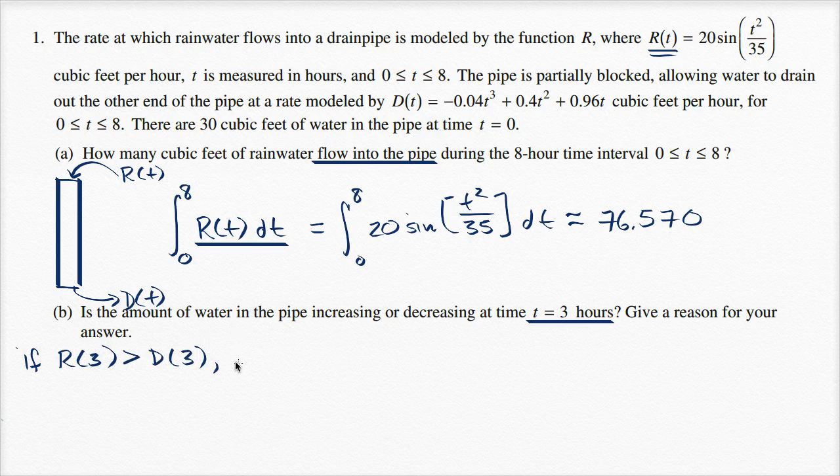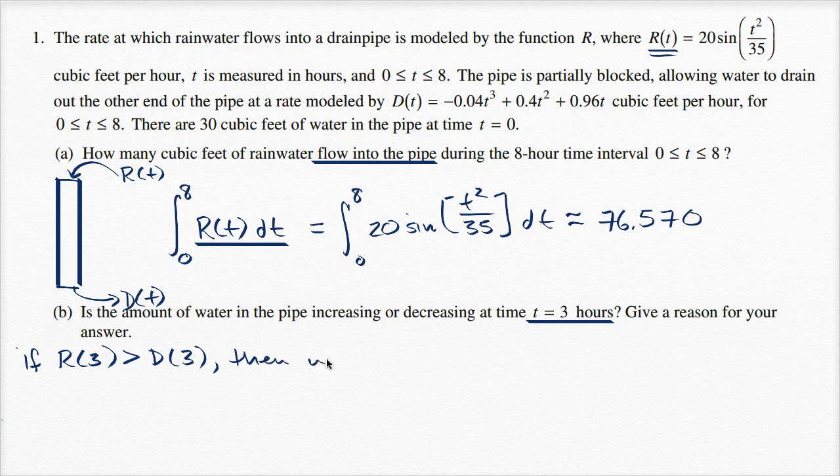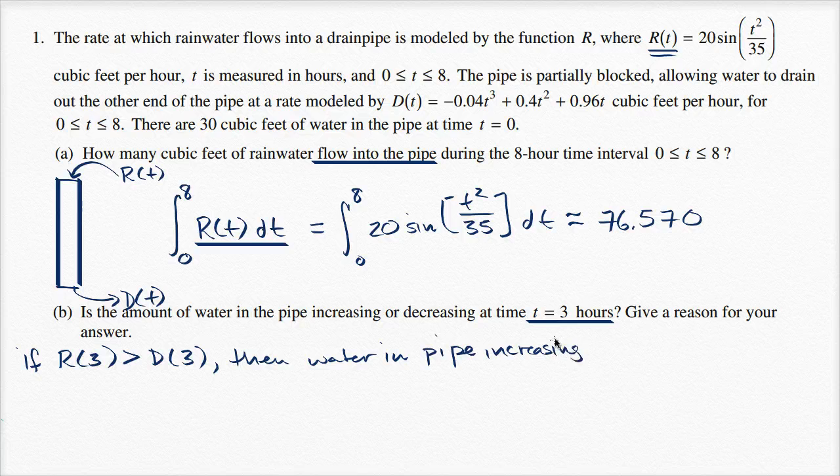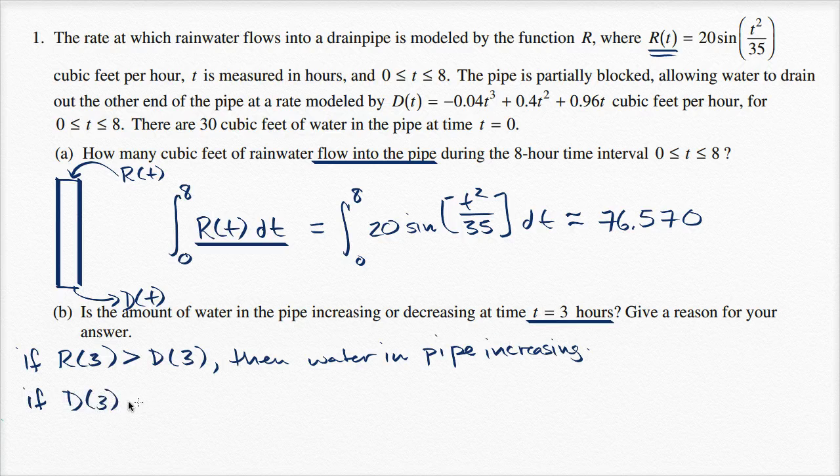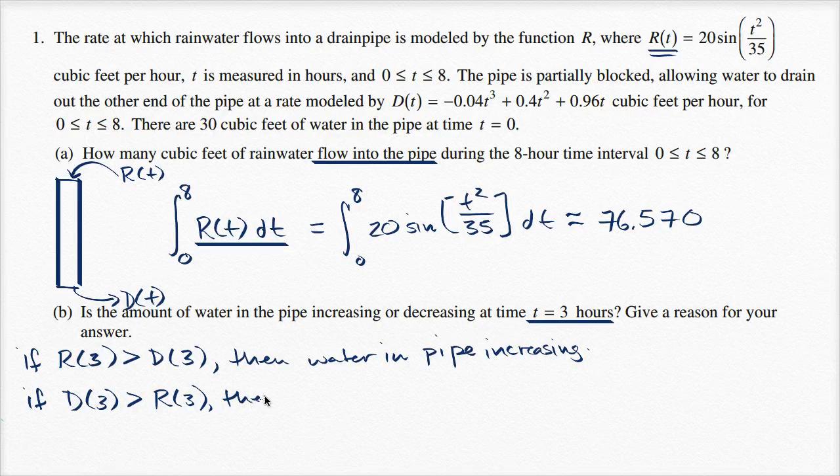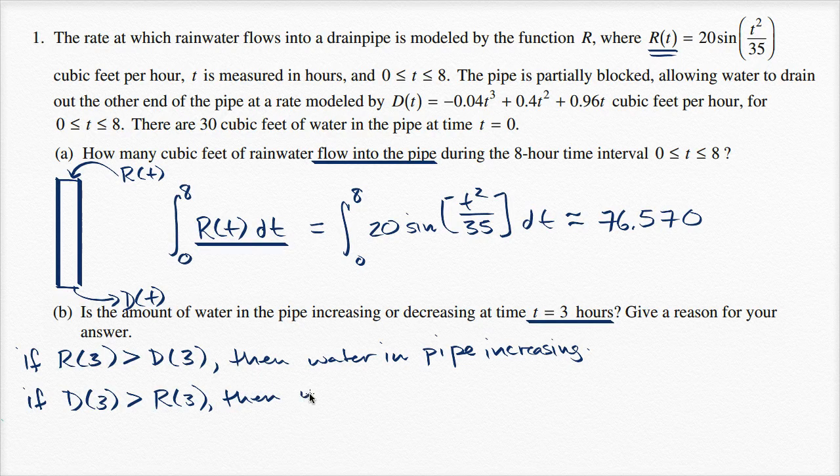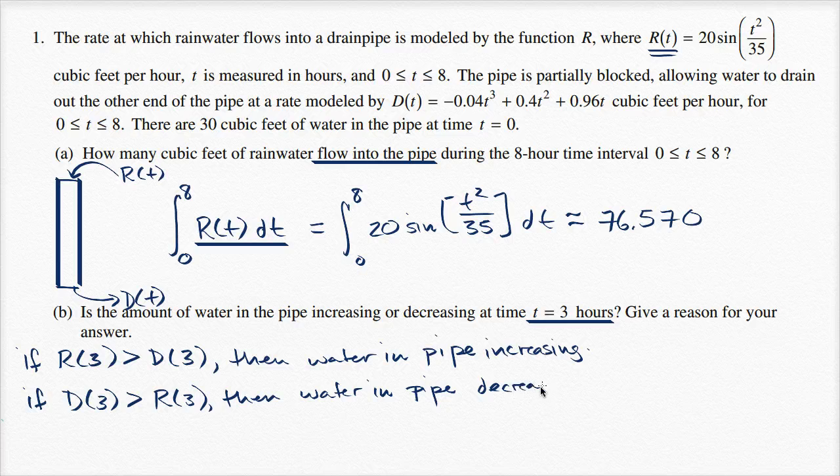And then, if it's the other way around, if D(3) is greater than R(3), then water in pipe decreasing. Then you're draining faster than you're putting into it. Then water in pipe decreasing. So we just have to evaluate these functions at three.